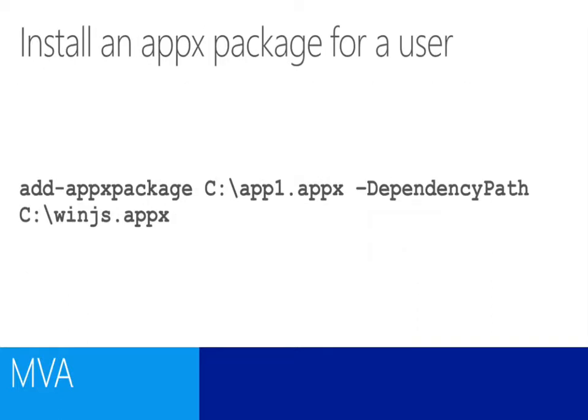The actual PowerShell to complete the installation of an APPX package is very simple. It uses Add-AppxPackage and the location of the package that we want to sideload. We also provide the path to any dependencies that we want to sideload along with this particular application, and those dependencies could be resource files such as the WinJS APPX package that are required in order to make the application work.